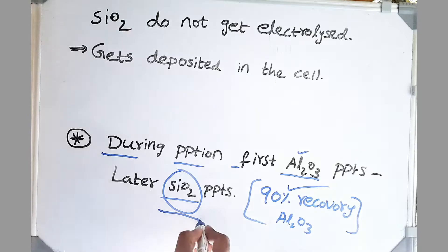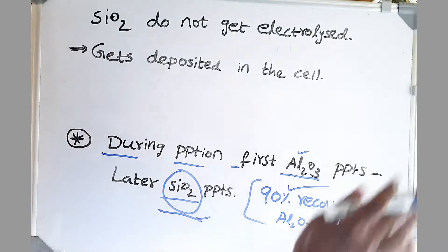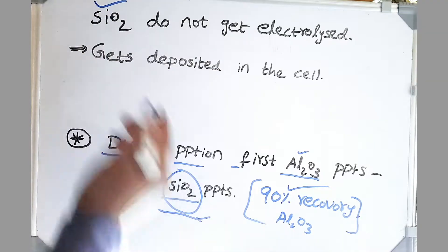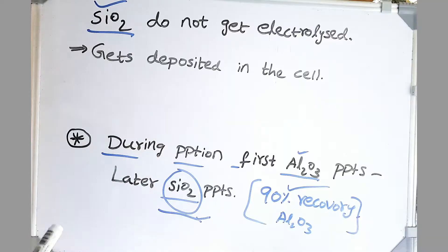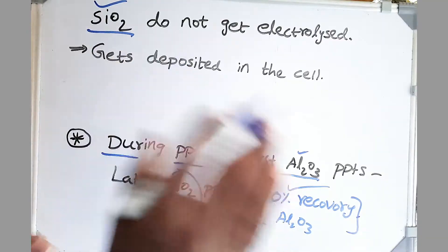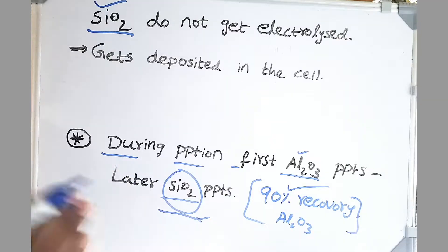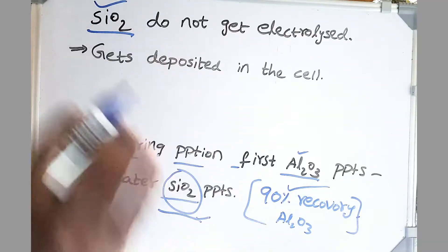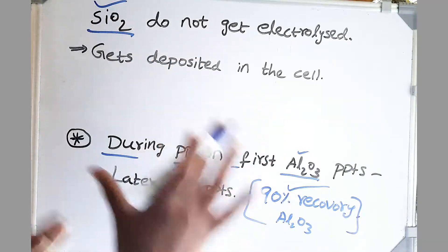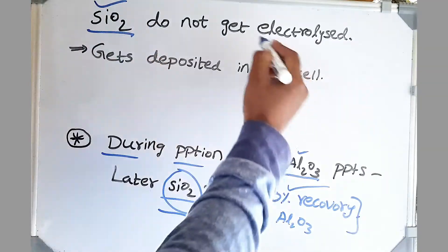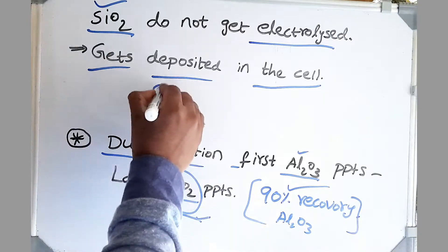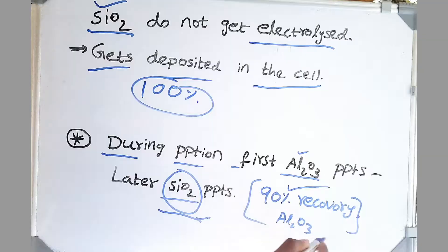We do not want SiO2 in the product because we feed it into our electrolytic cell — fused salt electrolysis — where SiO2 does not get electrolyzed. SiO2 does not dissolve in cryolite because cryolite is an alumina salt. As discussed in the last video, Al2O3 is the only oxide which dissolves in a salt — oxides dissolve in oxides, halides dissolve in halides, but Al2O3 is the exception that makes the Hall-Héroult process possible. SiO2 does not get electrolyzed, so it gets deposited in the cell, creating a lot of problems. So we always try to get almost 100% pure Al2O3 for use in our fused salt electrolysis.